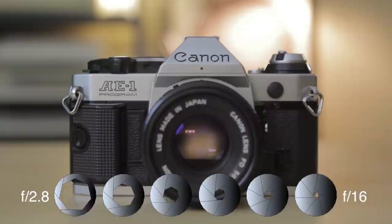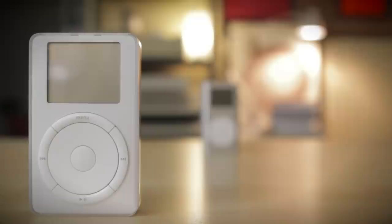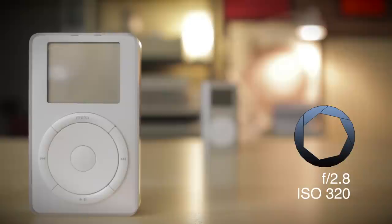The second major way aperture affects your image is in depth of field. The larger the aperture, the more shallow or narrow the depth of field or focus area is. In this image, I'm shooting at f2.8 and you can see the front iPod is in focus while the back iPod is blurred.